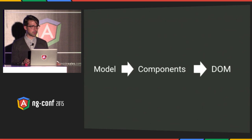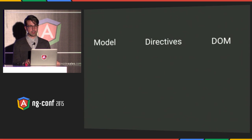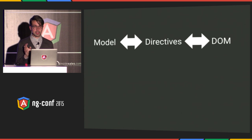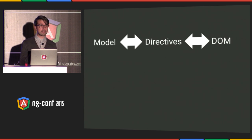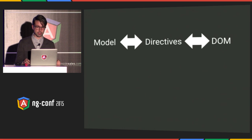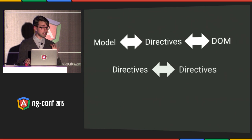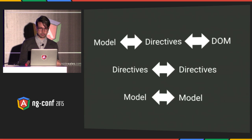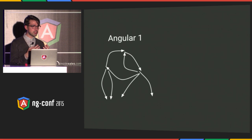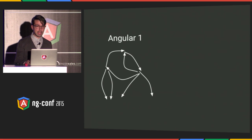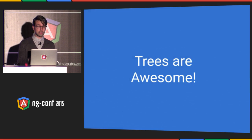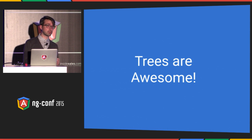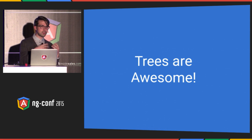So how is it different from Angular 1? Angular 1 currently has a very similar mechanism, but in Angular 1 the arrows point in both directions. You can have DOM updating a directive via change detection, and a directive can affect a model, again via change detection. Moreover, a directive can affect another directive, and a model can affect another model. More formally, in Angular 1 the change detection graph has cycles. In Angular 2, it's a tree. And trees are fantastic — we all know how to reason about them.